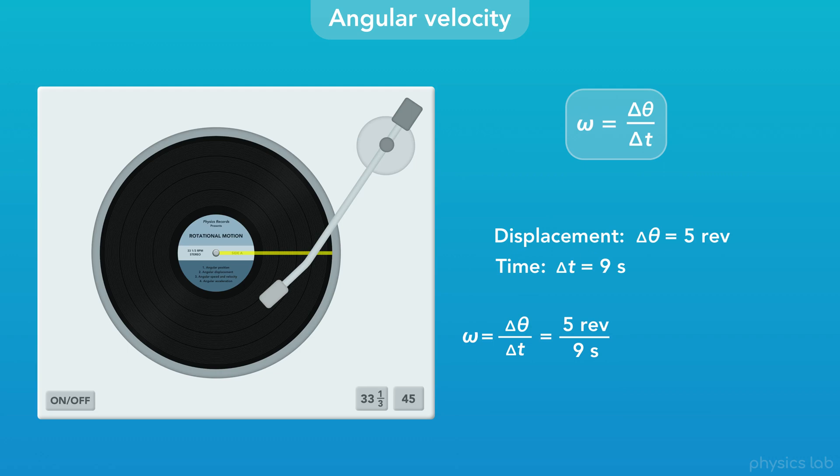then the angular velocity would be the angular displacement, 5 revolutions, over the period of time, 9 seconds. That gives us 0.56 revolutions per second.